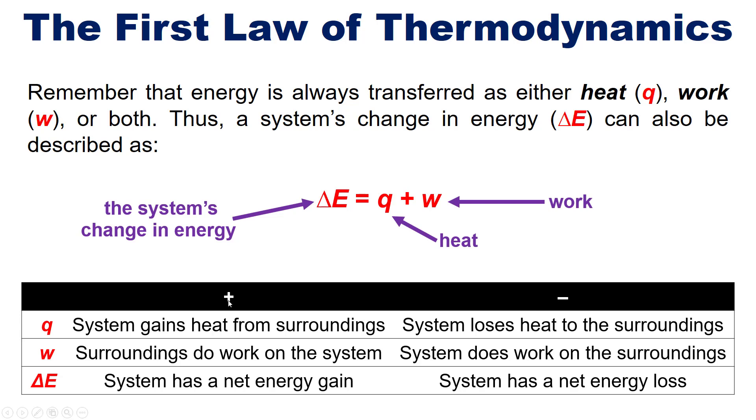Similarly, if you have a positive W, or work, then the surroundings are doing work on your system. Whereas if you have a negative work, then the system is doing work on the surroundings. And delta E, of course, is the sum of the two, Q plus W.